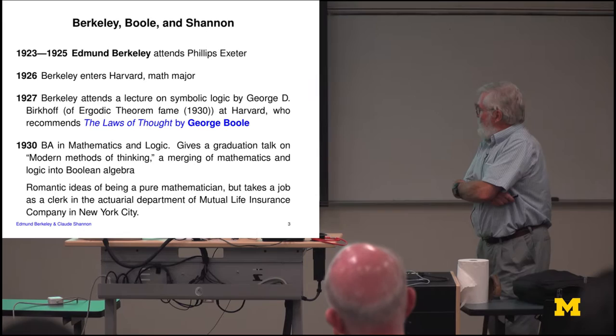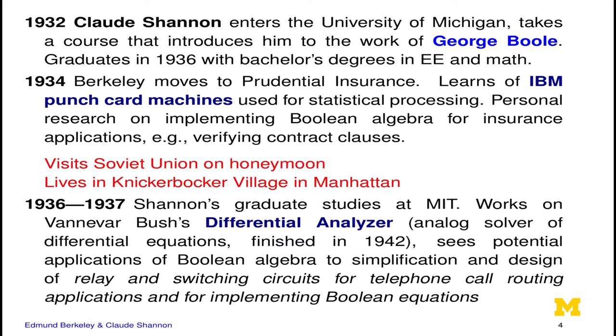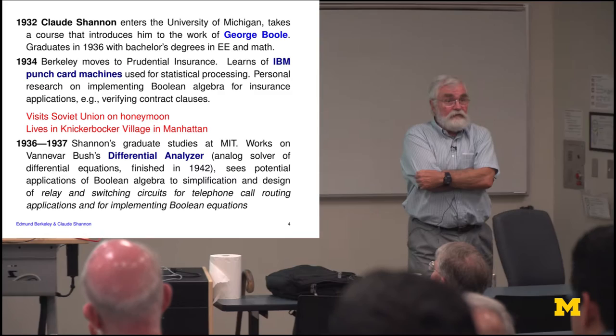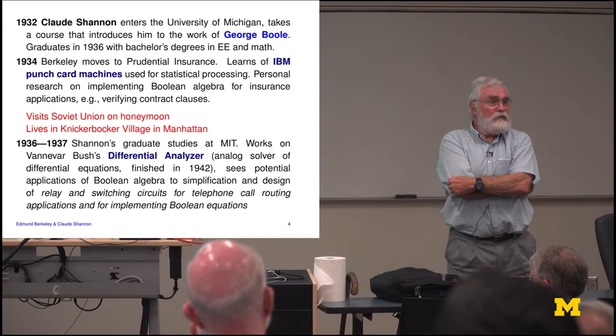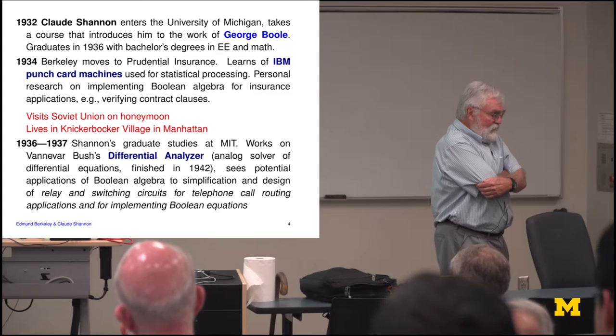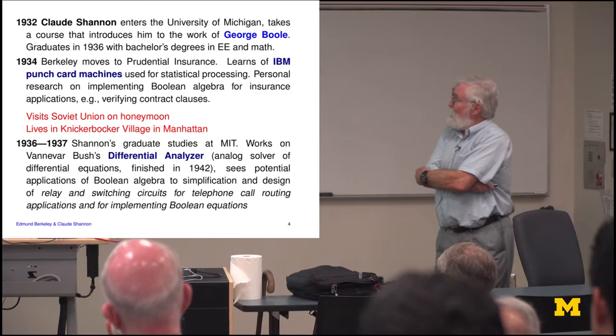Shannon is a little younger. He entered MIT in 1932, so you've probably heard a bit more about him than Edmund Berkeley. Shannon also discovered George Boole in a classroom and graduated in 1936 with degrees in EE and math. Berkeley, meanwhile, moved to Prudential Insurance. The insurance industry was very important in the founding of computer science because they had all of these numbers to crunch — statistics of millions, tens of millions of insurance policies — and it was costly to have people do all of that, so much of it was done by punch card machines.